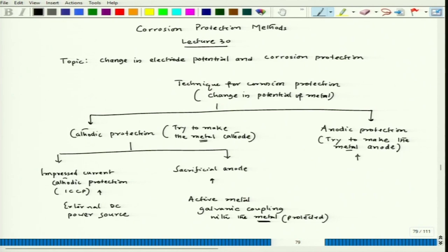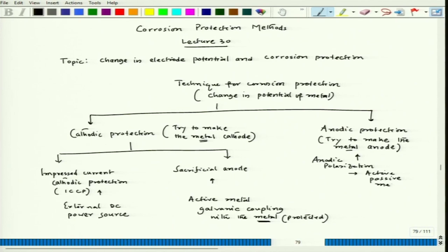In anodic protection, we try to take the metal into the more anodic side or positive end in terms of potential. If we maintain that potential at a certain level, we get to see a very low dissolution rate of the metal under protection. We make use of anodic polarization, and this can only happen in the case of active-passive metals. Here also we use an external DC power source.